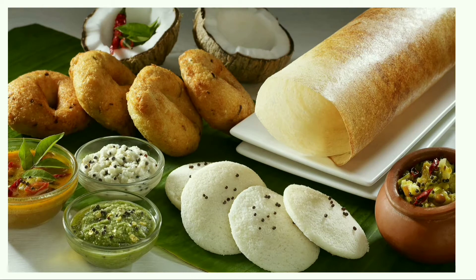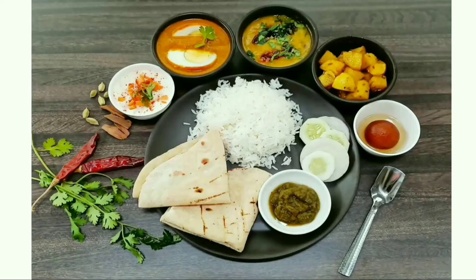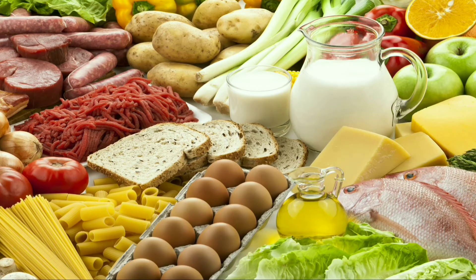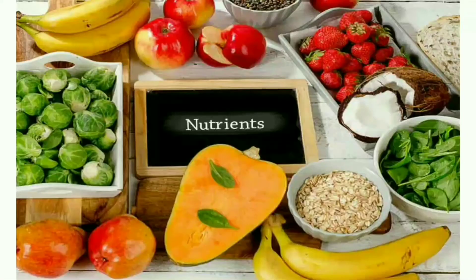Children, you know that we eat different types of food for our breakfast, lunch and dinner. Do you think our body needs all these different kinds of food? Yes, our body requires food that has different components in it, i.e., the components from both plants as well as animals. These components of food are called nutrients.